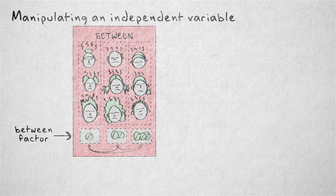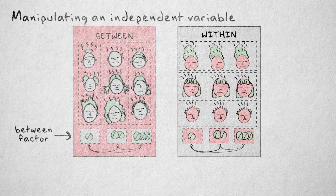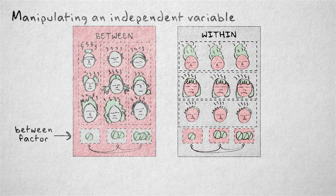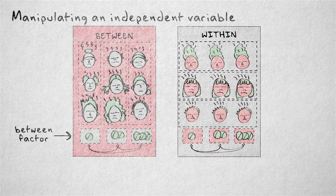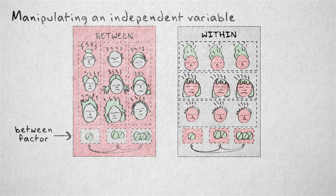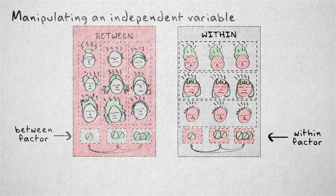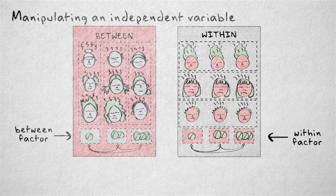In some cases, it's possible to let each participant experience all levels of the independent variable. When participants are exposed to all conditions, we refer to this as a within-subjects design. The independent variable is now called a within-subjects factor, or just a within-factor.